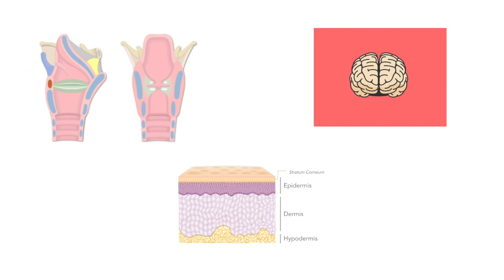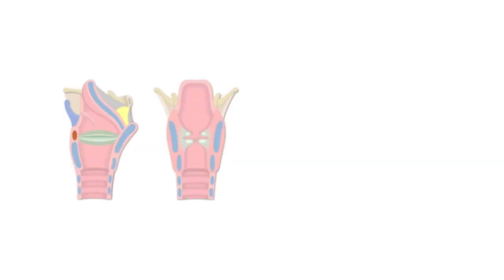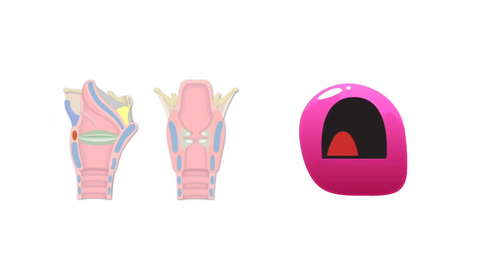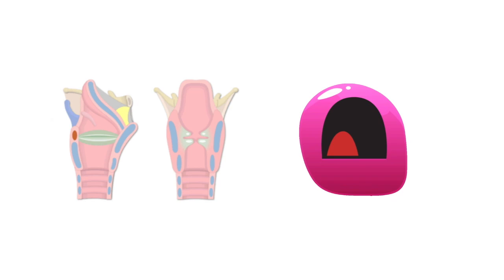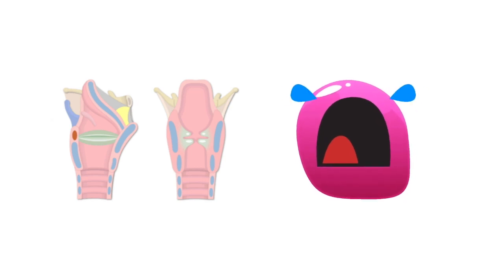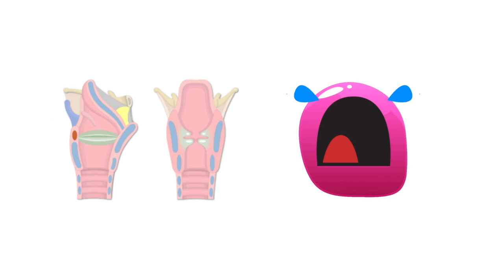Let's start with the vocal cords. The first clinical sign of lipoid proteinosis is often a weak cry or hoarseness due to infiltration of the laryngeal mucosa. Hoarseness remains throughout life and can progress to aphonia. The vocal cords are thickened with nodules, and on the epiglottis, occasionally a stridor may develop leading to tracheostomy.